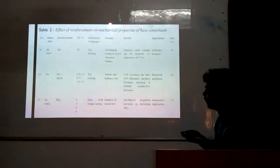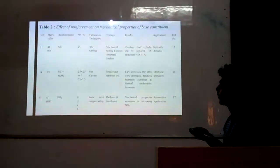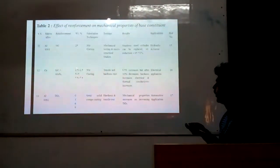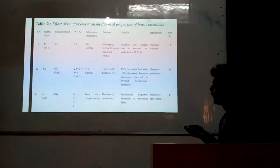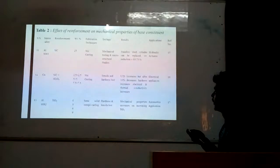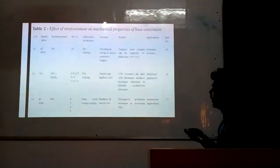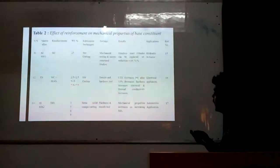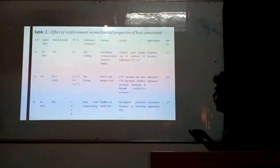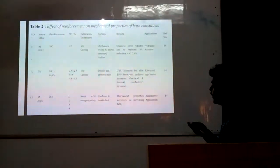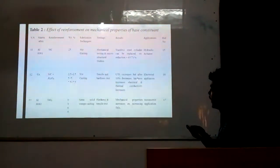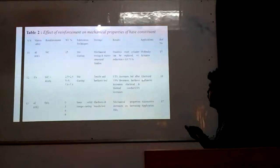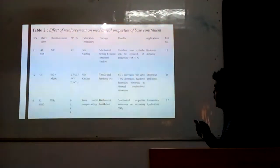In serial number 12, copper is mixed with silicon carbide and alumina at 2.5% and 2.5%, 5% and 5%, 7.5% and 7.5%, and 10% and 10%. Stir casting fabrication technique is used. Tensile and hardness tests have been performed. Results obtained show ultimate tensile strength increases but after 10% it starts decreasing. Hardness increases, electrical and thermal conductivity increases. It can be used in electrical appliances, details given in reference number 16.